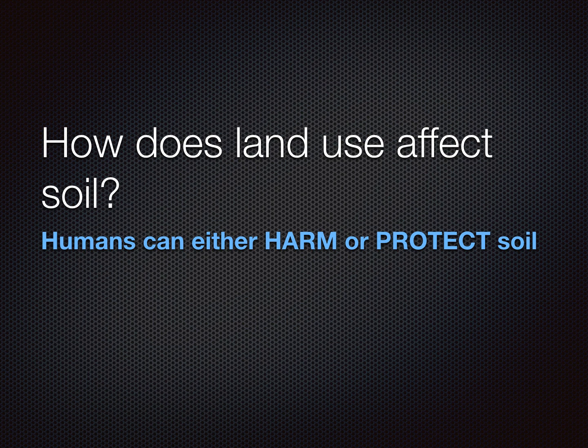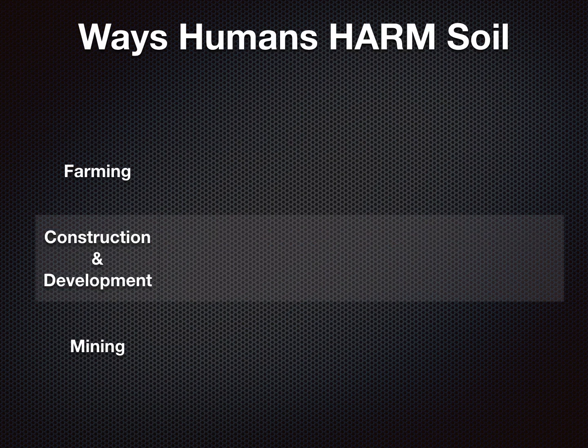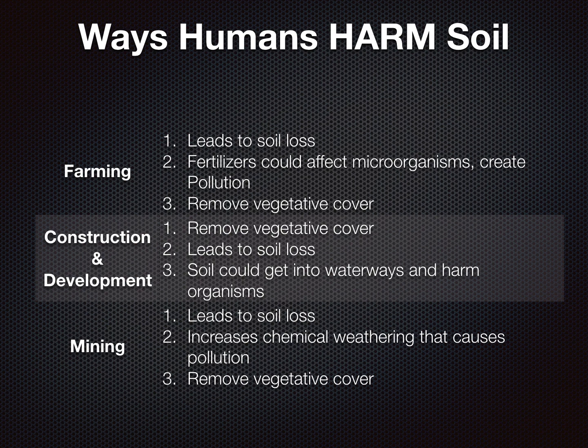We're going to talk about three ways humans harm soil. On your paper I gave you, you have farming, construction/development, and mining. Each of those have more than three ways, but we're going to focus on three ways that humans harm soil when they farm.